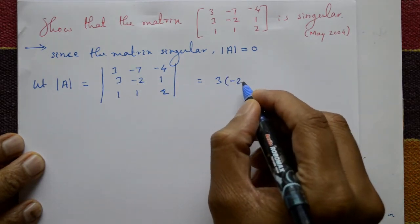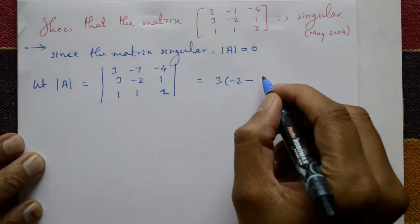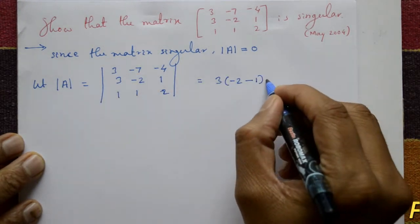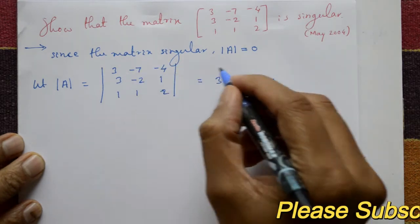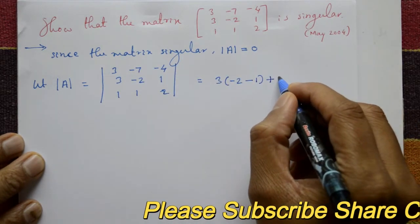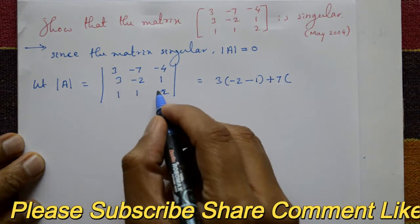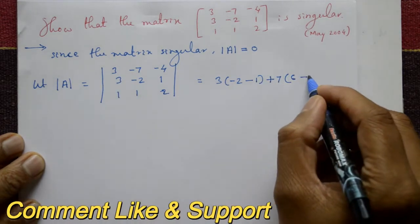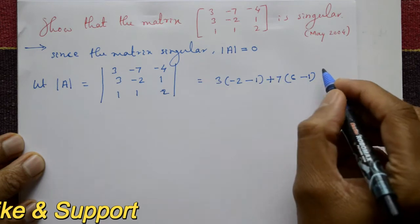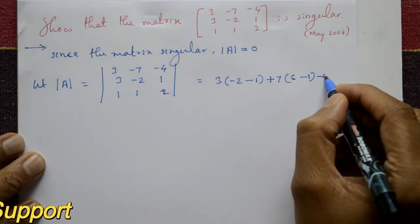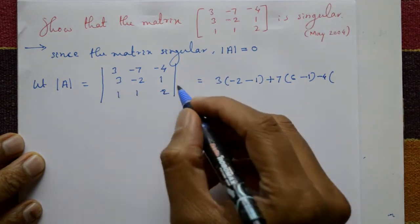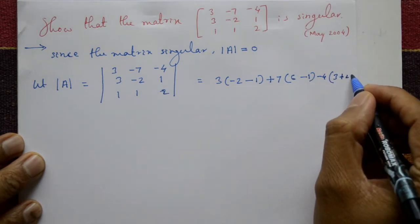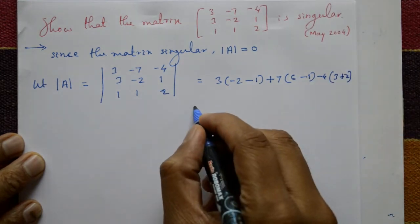For the first element: (-2 × 2) minus (1 × 1) gives -4 - 1 = -5. The second element is -7, so it becomes +7. Taking the minor: (3 × 2) minus (1 × 1) = 6 - 1 = 5. The third element is -4, with minor: (3 × 1) minus (1 × -2) = 3 + 2 = 5.